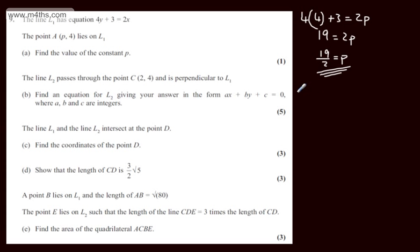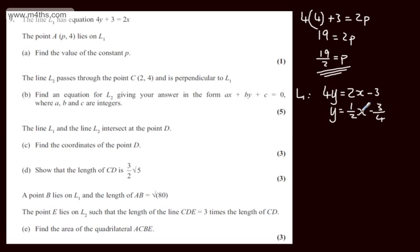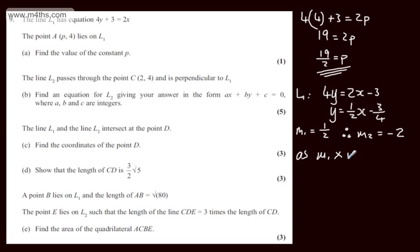Starting with L1, I can write it in the form y equals Mx plus C. So 4y equals 2x minus 3, and dividing both sides by 4 gives y equals one half x minus three quarters. I'll call this M1, the gradient of L1, so M1 equals one half. Therefore M2, the gradient of L2, which is perpendicular, will be the negative reciprocal. Since M1 times M2 must equal minus 1, M2 is minus 2.